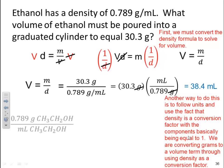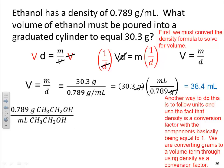So density is a conversion factor with the component basically equaling to 1. We are converting grams to a volume term through using density as a conversion factor. We have to think about this in terms of, okay, I have 0.789 grams of my ethanol per every milliliter of ethanol. Well, we're saying if I have 0.789 grams of ethanol, I have 1 milliliter of ethanol. Okay, so in essence, we can use this either way. If I had 1 milliliter of ethanol, I got 0.789 grams of ethanol because this is all equal to 1. It's a conversion factor.